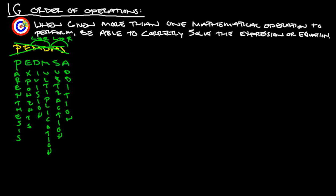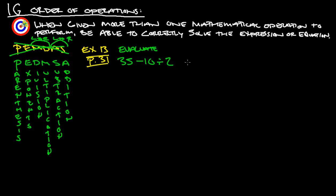For example, let's try example 13 on page 31. This says to evaluate: 35 minus 10 divided by 2 times 5 plus 3. So, with this, if we pay attention to PEDMSA instead of PEMDAS, it will steer us in the right direction.